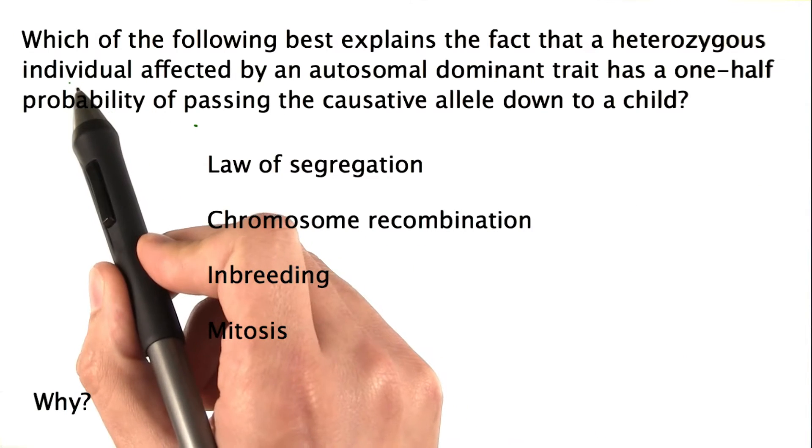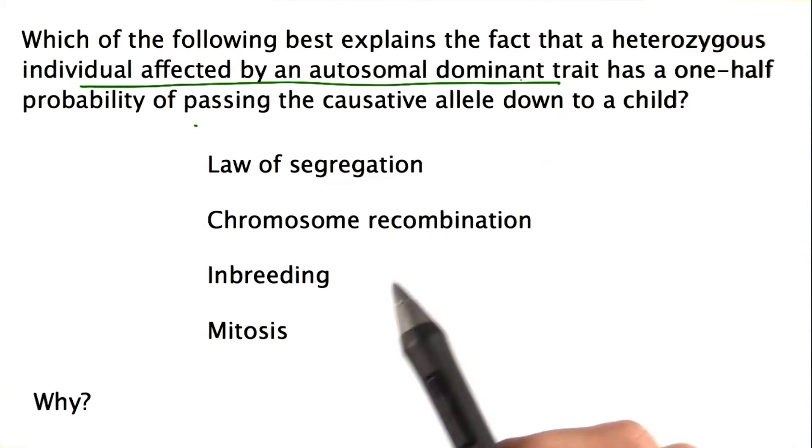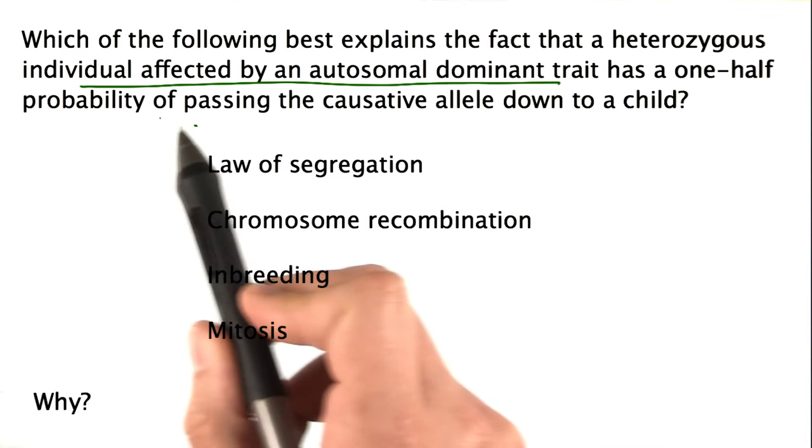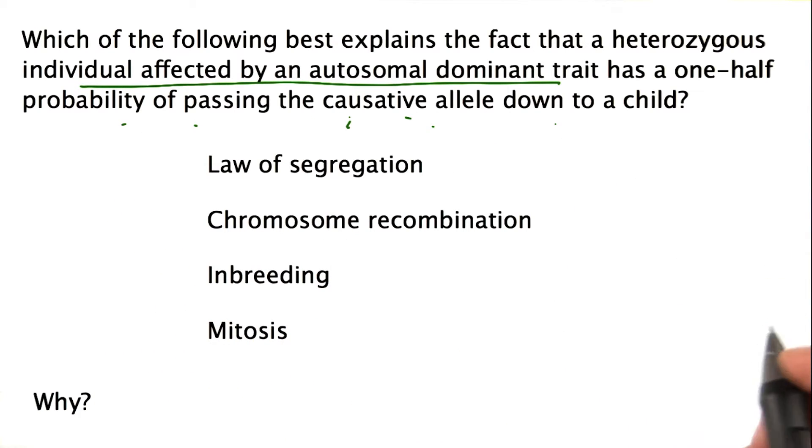This question is addressing the phenomenon where an individual affected by an autosomal dominant trait has a one-half probability, one-half chance of passing this causative allele down to a child.